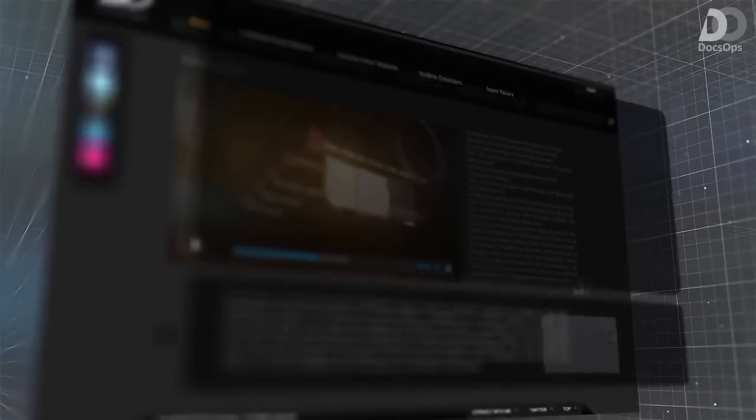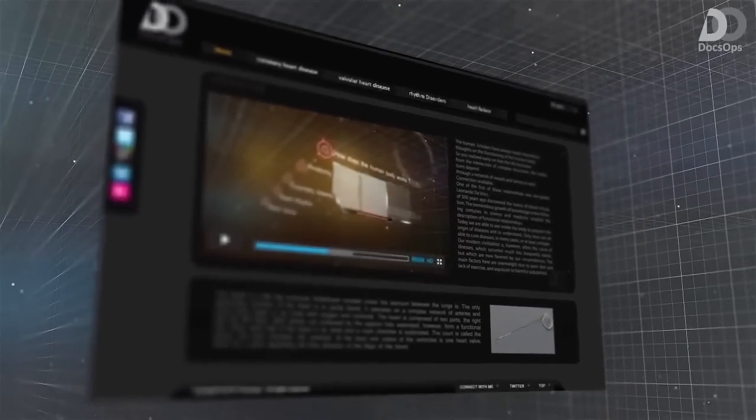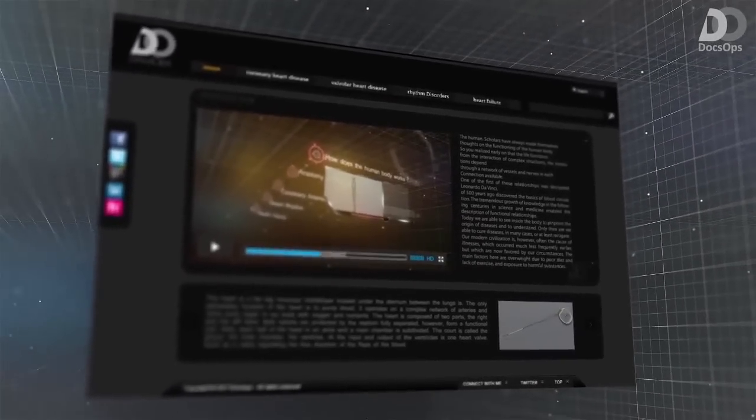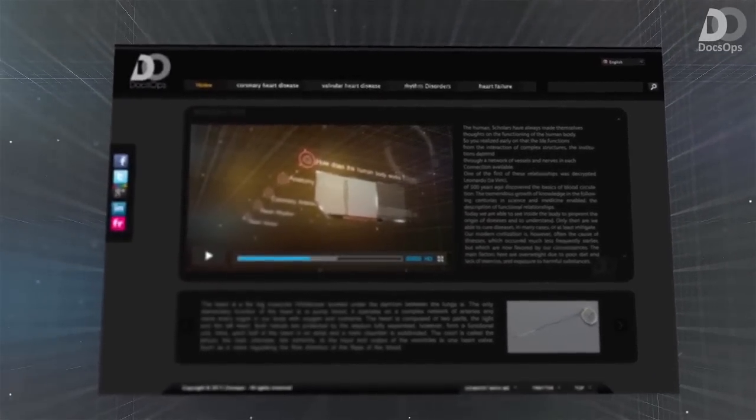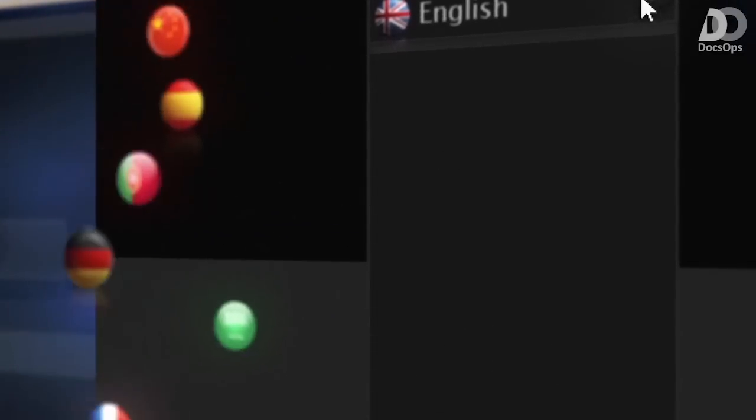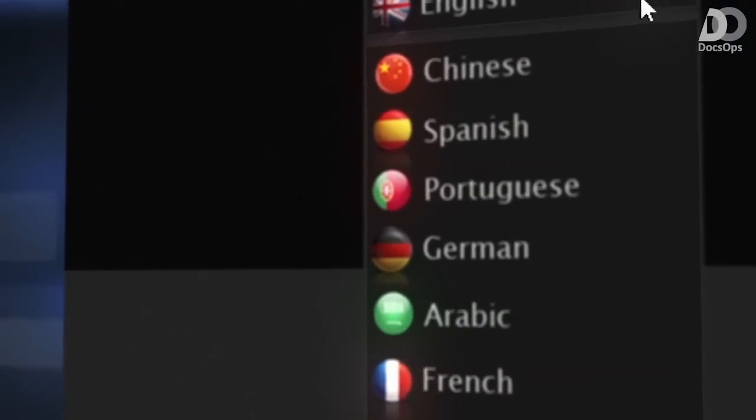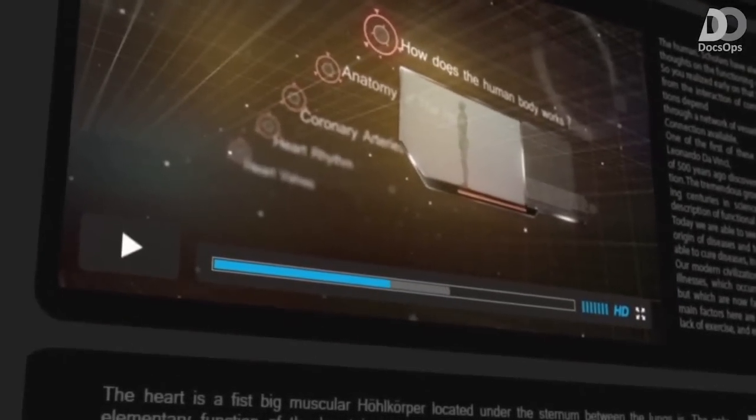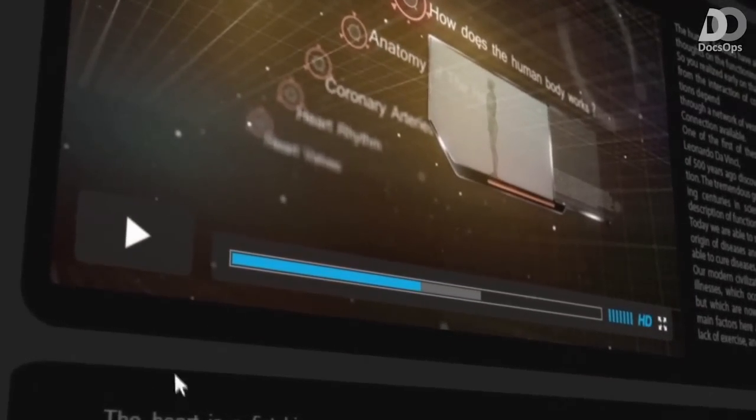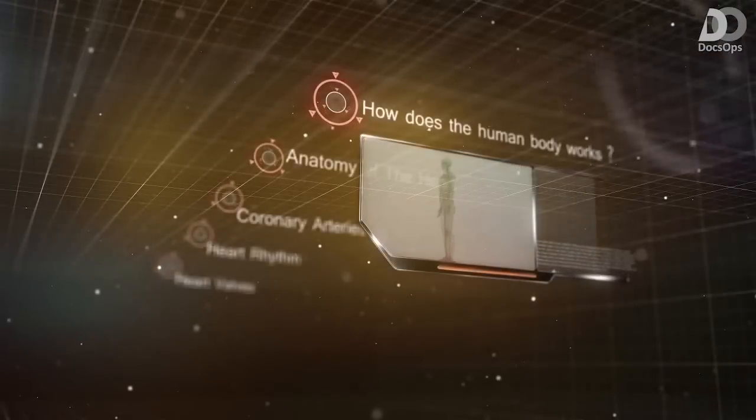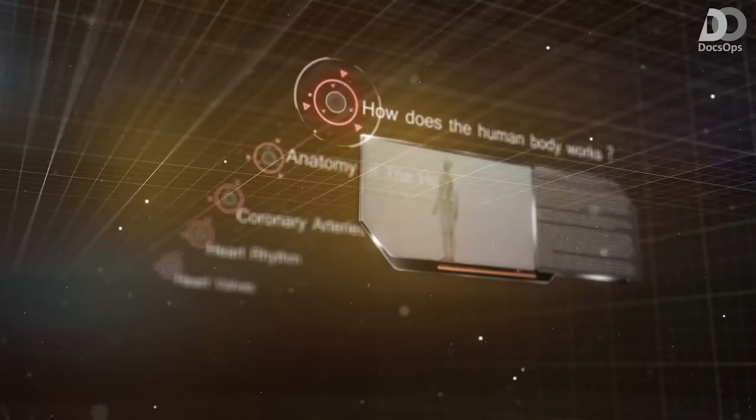The DocsOps website will provide patients with the information they need to make informed decisions about their health. Everything they need to know about their upcoming procedure will be literally at their fingertips. It's a multilingual site made for patients around the world where diseases, disorders, and their respective treatment options are presented with the help of advanced CGI and in familiar terms.